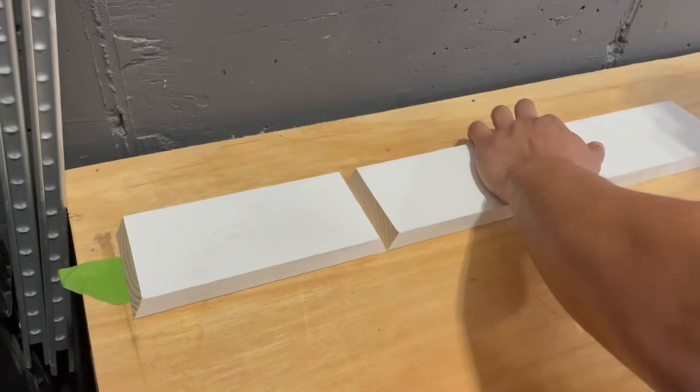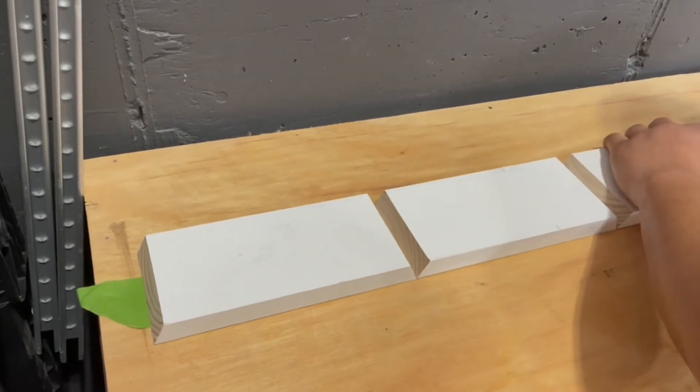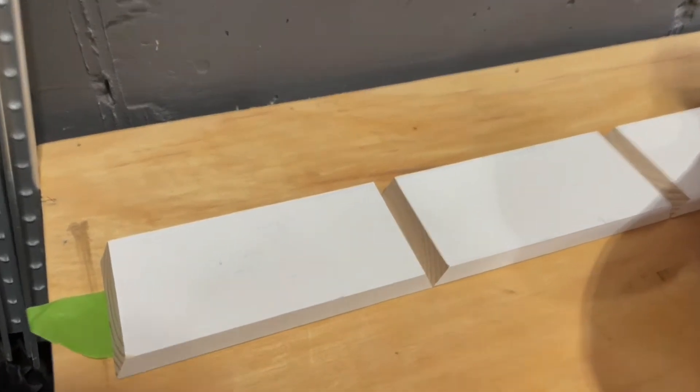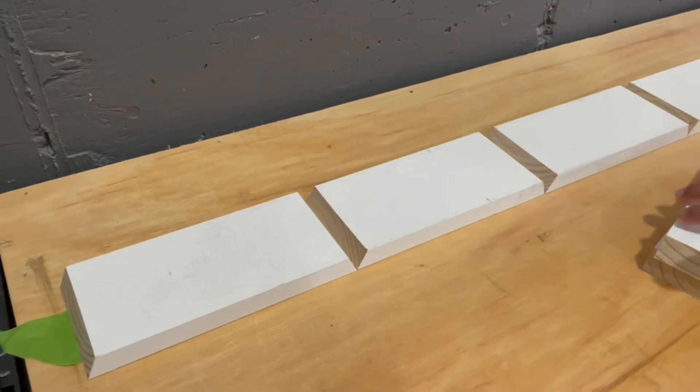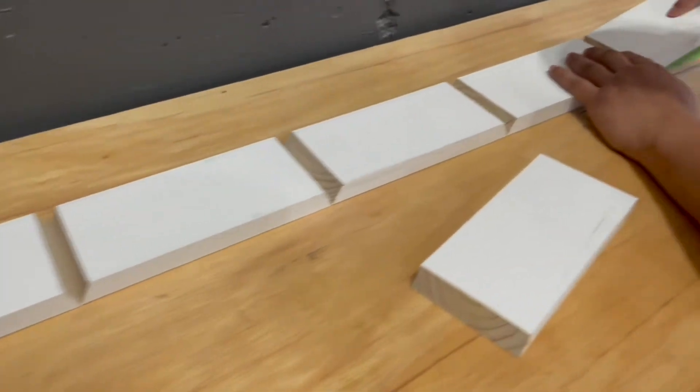Okay so here we are laying them down on painter's tape. We're just butting up the joints. This is a trick that we do.